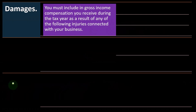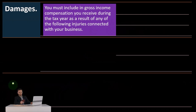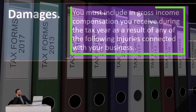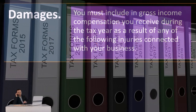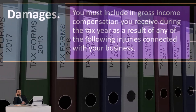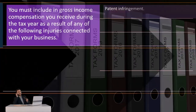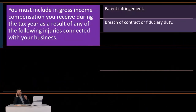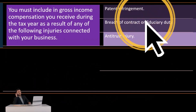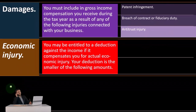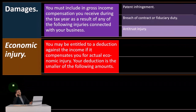So then we have damages. You must include in gross income compensation you receive during the tax year as a result of any of the following injuries connected with your business: patent infringement, breach of contract or fiduciary duty, antitrust injuries, or economic injury.